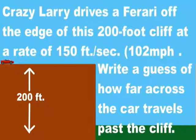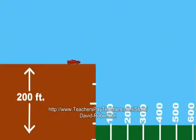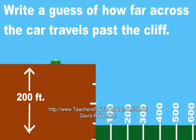Crazy Larry drives a Ferrari off the edge of this 200-foot cliff at a rate of 150 feet per second. Insane Irma drives a Beetle off the edge of this 200-foot cliff at a rate of 60 feet per second. That's about 41 miles per hour. Write a guess as to how far horizontally this car travels past the cliff.